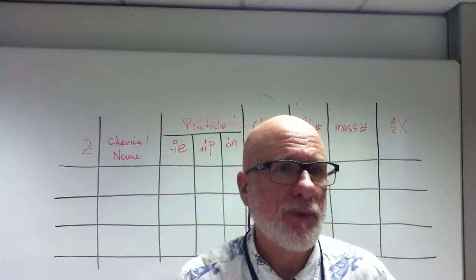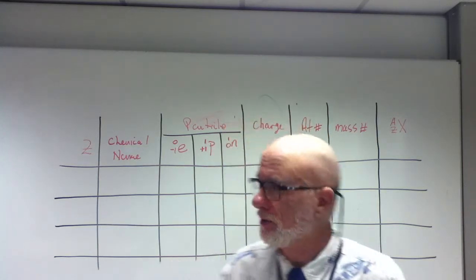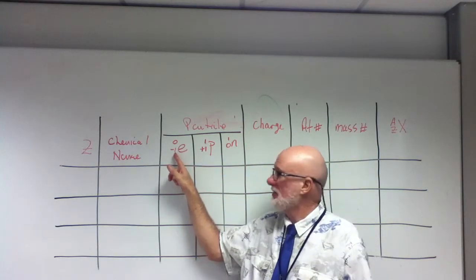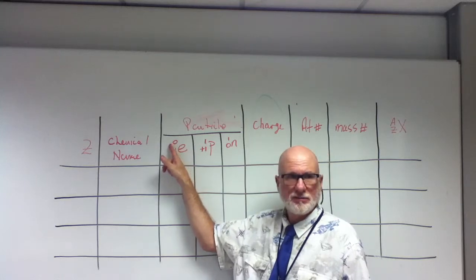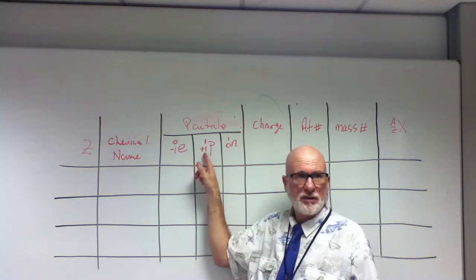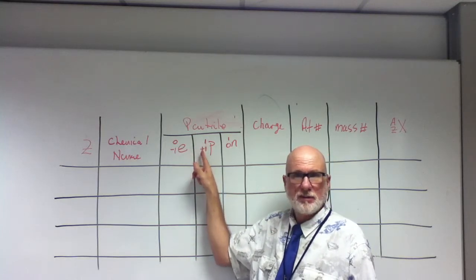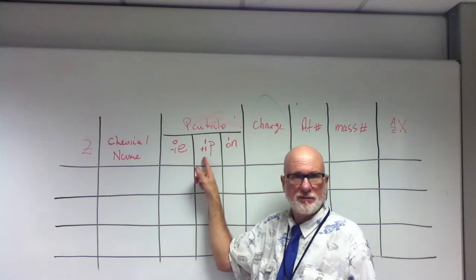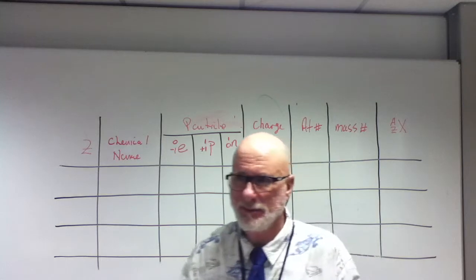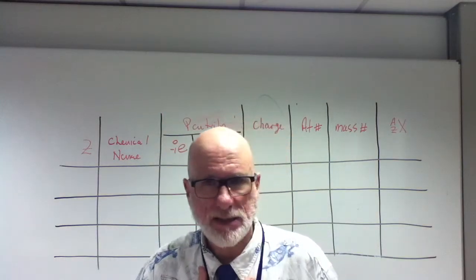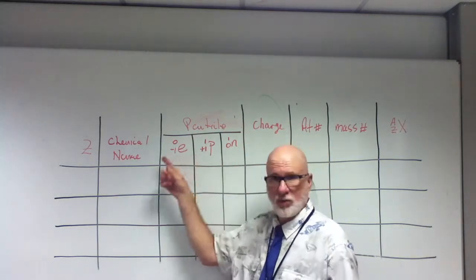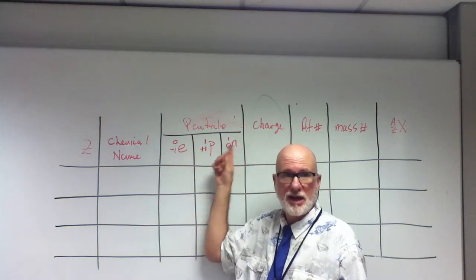But when we're writing the individual particle, the electron, see how you have the charge there? The mass of the electron is zero, correct? Then you have the charge, negative one. The proton, the mass is one, and the charge is plus one. The neutron, the mass is one, and the charge is zero. That's where they come from. So when I write proton, neutron, electron, oftentimes I write them with this type of notation. Clear?